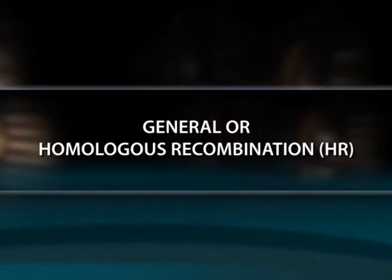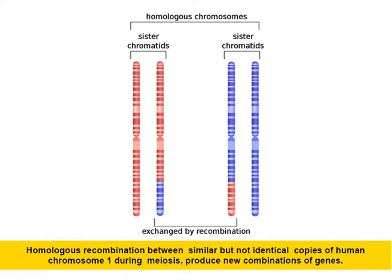General recombination is an integral part of the complex process of meiosis in sexually reproducing organisms. It results in a crossing over between pairs of genes along a chromosome which are revealed in appropriate matings. The chiasmata that link homologous chromosomes during meiosis are the likely sites of the crossovers that result in recombination. Homologous recombination occurs between similar but not identical copies of the human chromosome 1 during meiosis, which produces new combinations of genes. General recombination also occurs in non-sexual organisms when two copies of a chromosome are present.